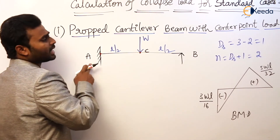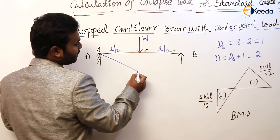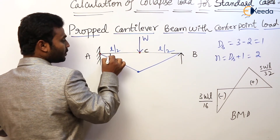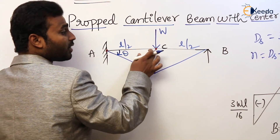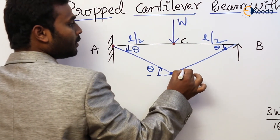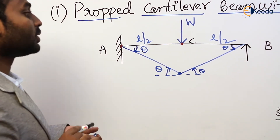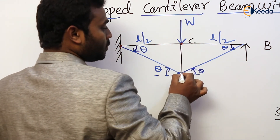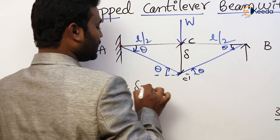Looking at the mechanism diagram: segment AC rotates in the anticlockwise direction, and since the plastic hinge forms exactly at the center C, both AC and BC each subtend an angle theta. Segment BC also rotates in the anticlockwise direction. According to the principle of virtual work, external work equals internal work. The displacement delta at C equals (L/2) × theta.